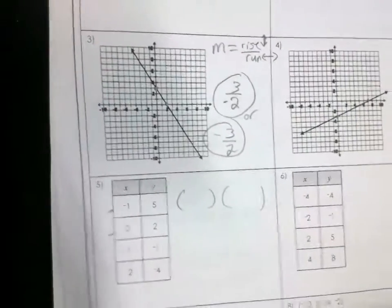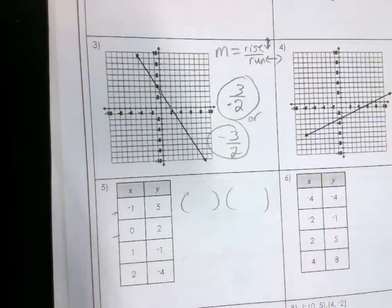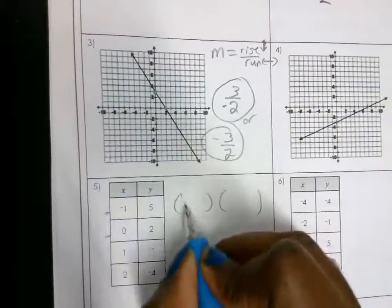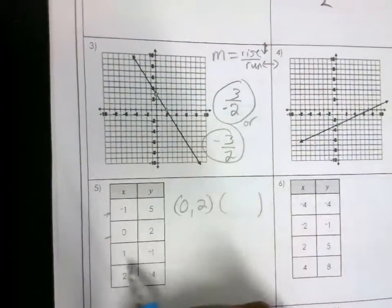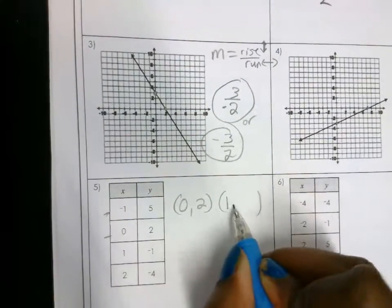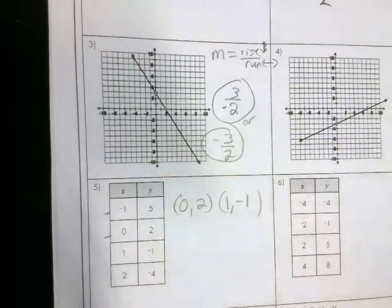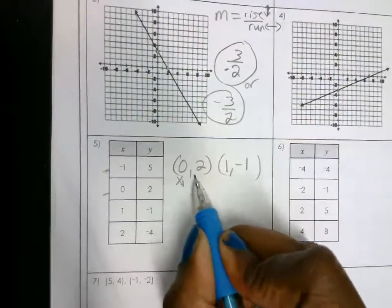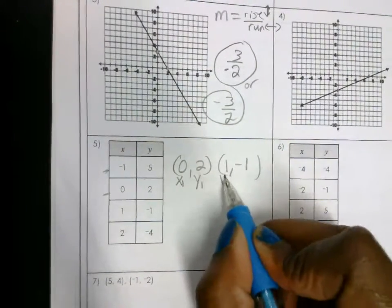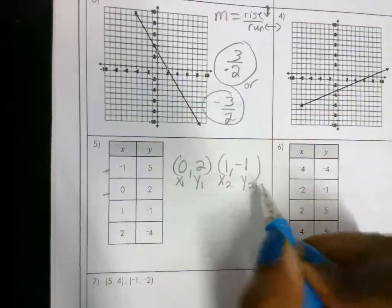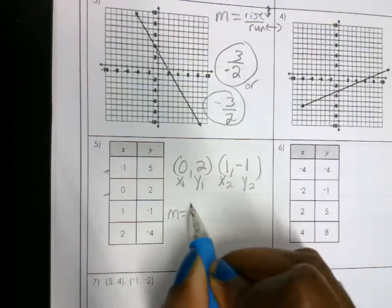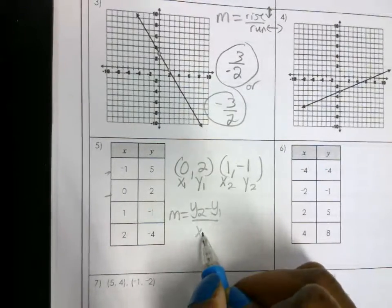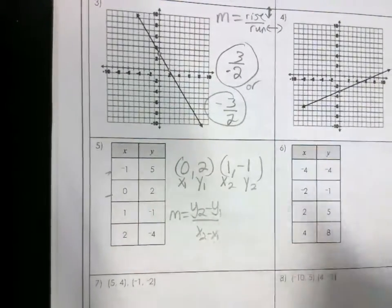All right. Number 5, you pick two good points, okay? So it doesn't matter. I'm going to choose 0 and 2, and then I'm going to choose 1 and negative 1. So now I'm going to label my points. The first point, x1, y1, second point, x2, y2. I'm going to use the slope formula, y2 minus y1 over x2 minus x1, okay?